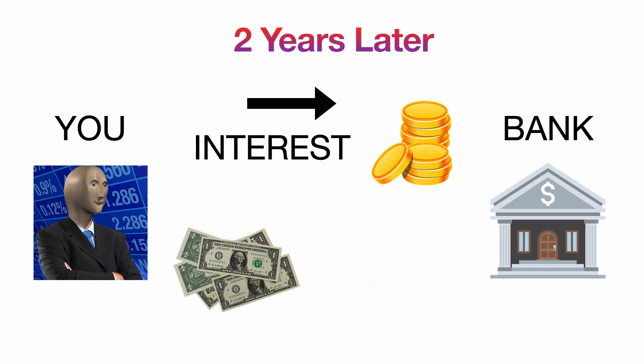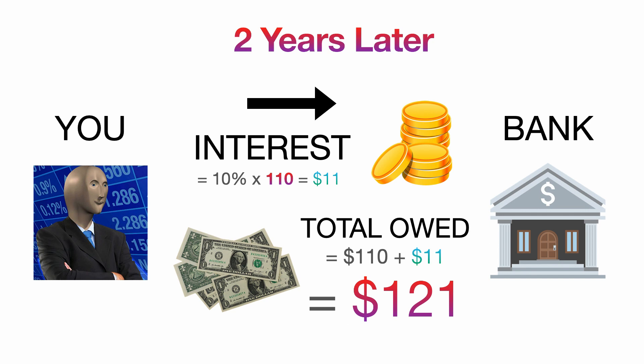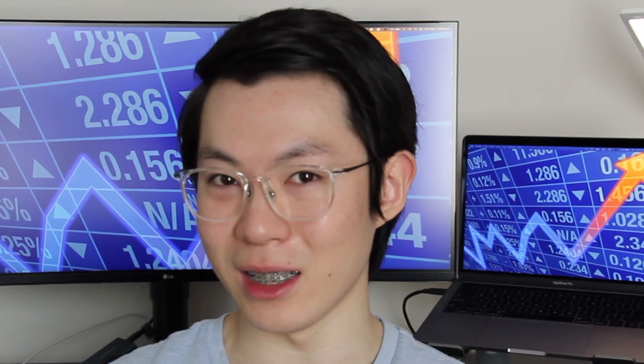Compound interest is calculated based on not just the initial principle, but the whole balance. So we need to pay 10% of $110 rather than $100. So now our balance for year 2 is $121 rather than $120, a whole dollar more than simple interest. It's not a lot right now, but over time it's going to keep compounding and compounding, just like your study scores if you study hard.